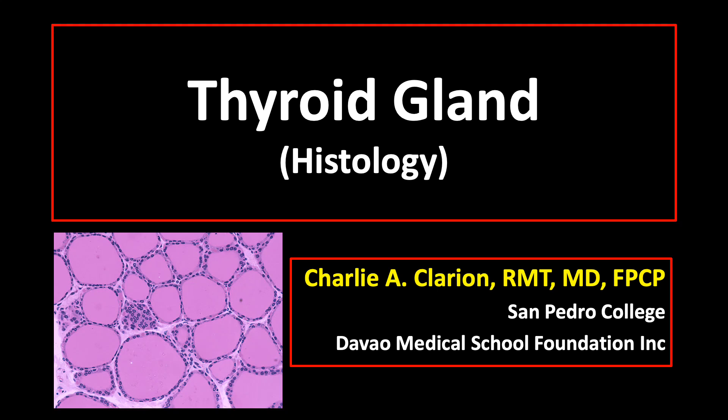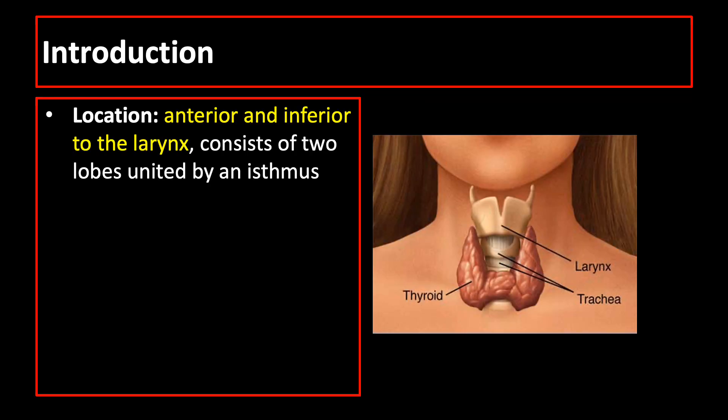Good morning, students. Our topic for today is about the histology of the thyroid gland. The thyroid gland is located anterior and inferior to the larynx, consisting of two lobes united by an isthmus.